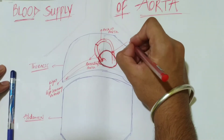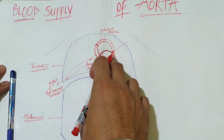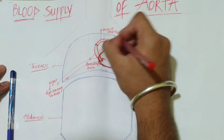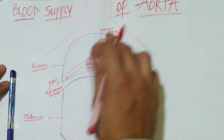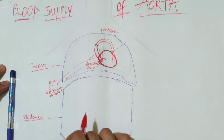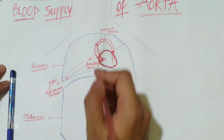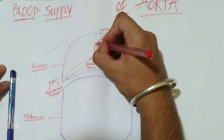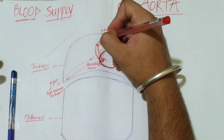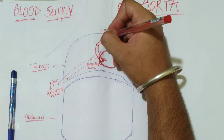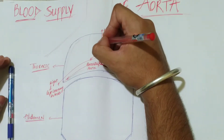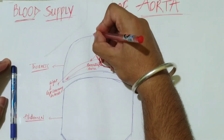Where the arc of aorta ends, the thoracic aorta begins. Now let's look at the branches of the arc of aorta. From where the arc of aorta begins, a branch arises to the right side of the body called the brachiocephalic trunk.